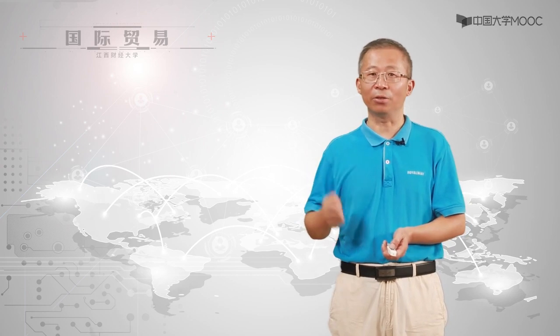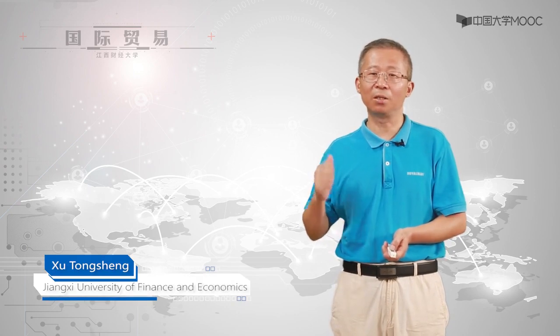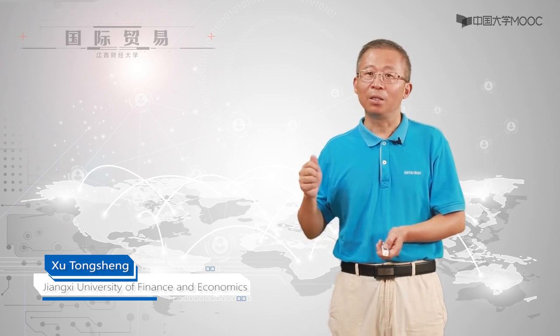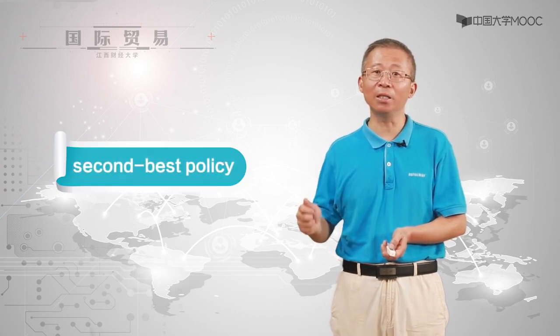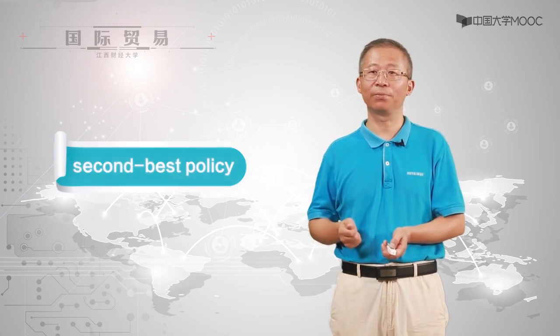Since Friedrich List developed this argument at the beginning of the 19th century, infant industry protection has been immensely criticized among economists. Most economists agreed that some reasonable circumstances would justify the temporarily and limited protection of an infant industry. Nevertheless, there is a bigger community of opponents who claim that protection is likely to be only the second-best policy, not the first-best policy. Despite this opposition, almost all countries of the world have developed their industrial base by applying infant industry protection.